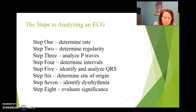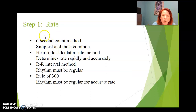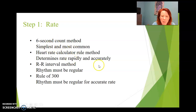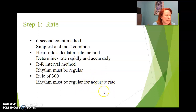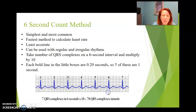Step one is the rate. We use the six-second count method — it's the simplest and most common method. We also use the R2R method. Anything more particular than that requires a ruler and doing really discrete calculations.